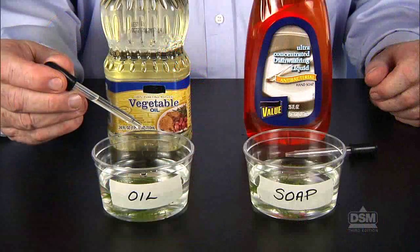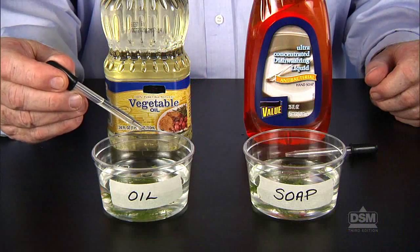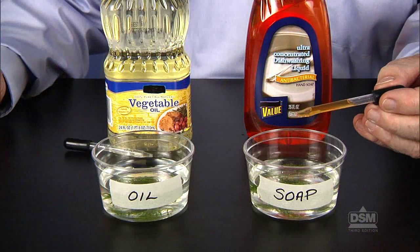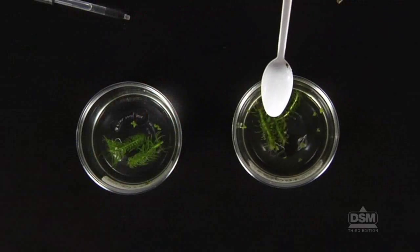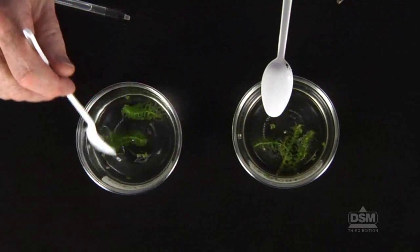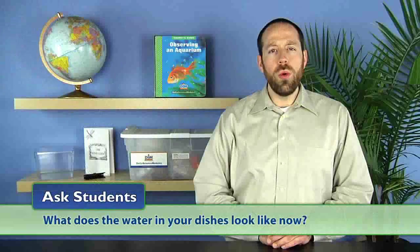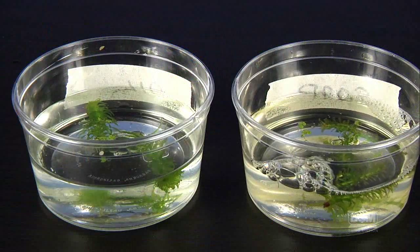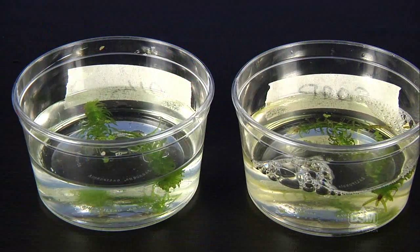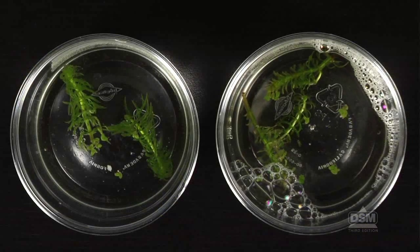Next, supervise students as they add ten drops of vegetable oil to one dish and ten drops of detergent to the other. Tell them to stir the water with a plastic spoon so that the plants are completely covered by the oil and detergent. Ask students, what does the water in your dishes look like now? Students will observe the oil begin to separate and float to the surface of the water and cling to the leaves. The dish of detergent may contain soap bubbles.